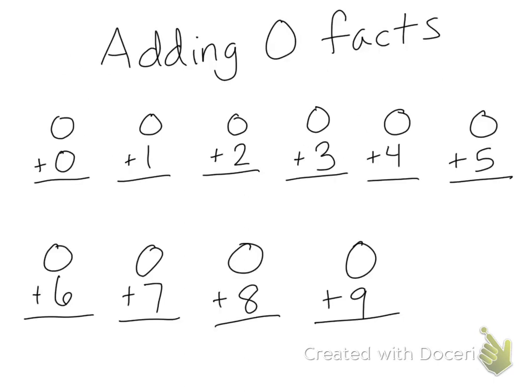So here I have all of these adding zero facts. When we are adding zero to a number, what happens? Zero plus zero is zero, zero plus one is one, zero plus two is two. What have you noticed? When we add zero to a number, the answer will always be the number. It doesn't matter what that number is — it is always going to be the same number when we add zero.